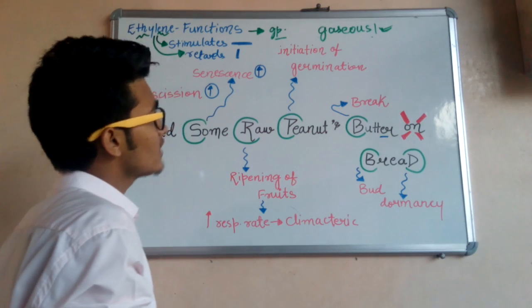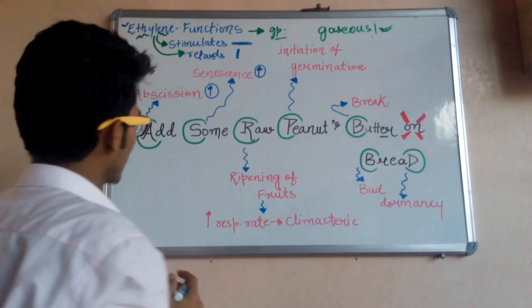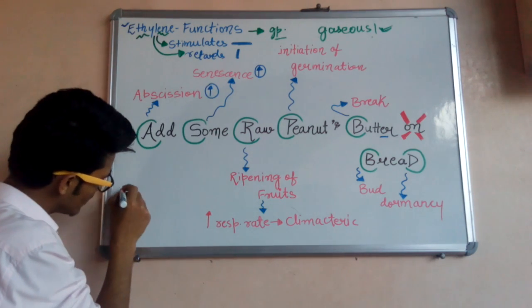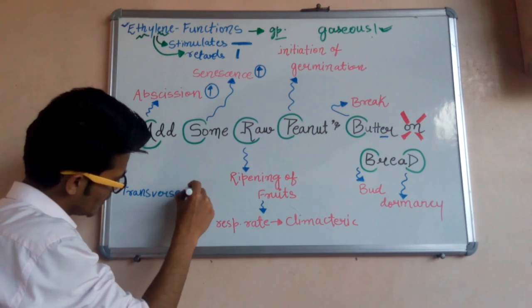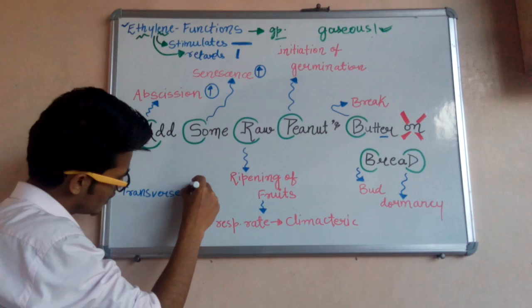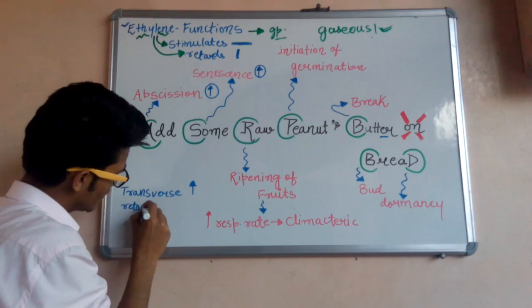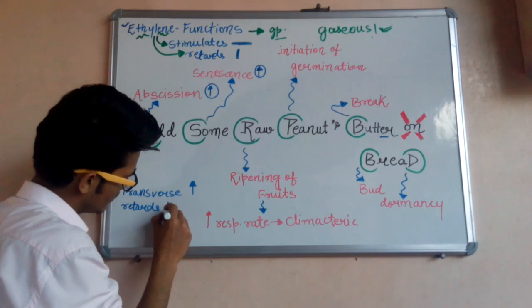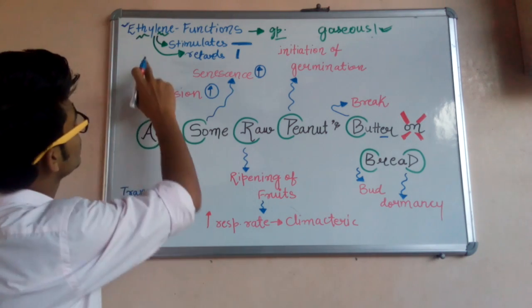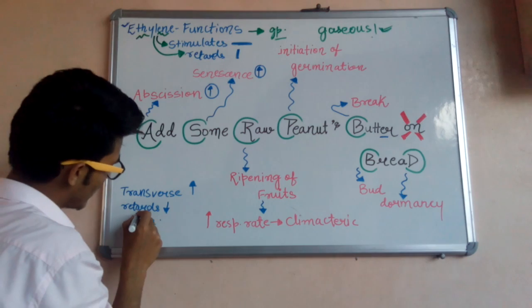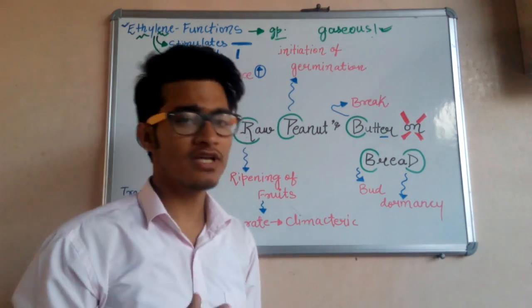A very important question is: which of the following is a gaseous hormone? And the answer is ethylene. Now, some important points about ethylene: it stimulates transverse growth but it retards longitudinal growth. Now let's look at the different functions of ethylene.